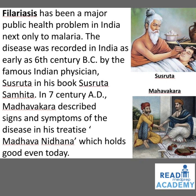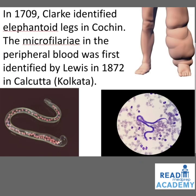In the 7th century AD, Madhavakara described signs and symptoms of the disease in his treatise Madhavanidana, which holds good even today. In 1709, Clark identified elephantoid legs in Cochin. The micro-filaria in the peripheral blood was first identified by Lewis in 1872 in Calcutta, now called Kolkata. You can see images of the filarial leg, the micro-filaria, and the worm of filaria.